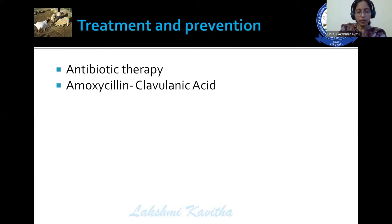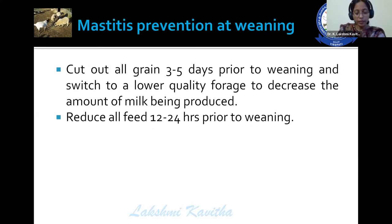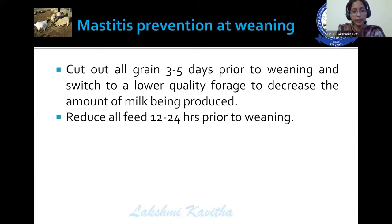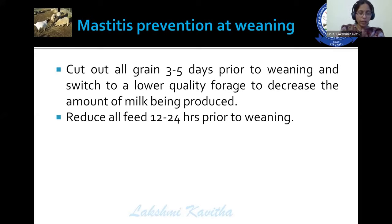Treatment includes antibiotic therapy — amoxicillin-clavulanic acid is showing good results, along with cephalosporins. In order to go for antibiotic treatment in these animals, try to use lower generation antibiotics; don't go for higher generation. For mastitis prevention at the time of weaning, cut out all grains 3 to 5 days prior to weaning, switch to lower quality forage to decrease milk production, and reduce all feeding 12 to 24 hours prior to weaning. Reducing feed prior to weaning results in reduced milk production in the gland, which in turn reduces the occurrence of mastitis.